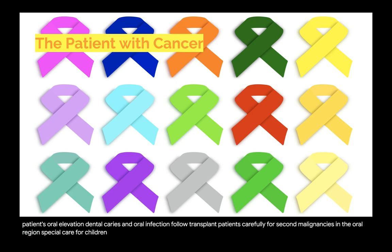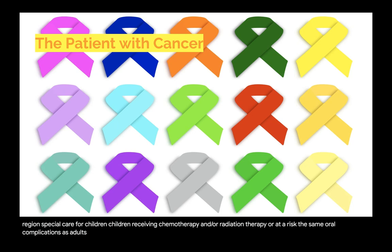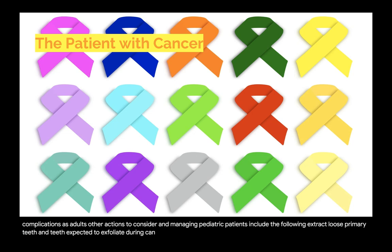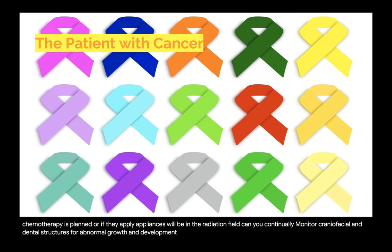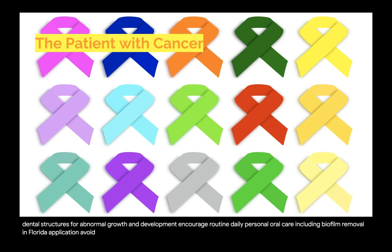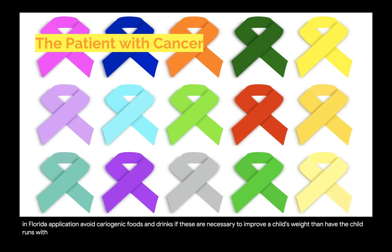Special care for children: children receiving chemotherapy and/or radiation therapy are at risk for the same oral complications as adults. Additional considerations include extracting loose primary teeth and teeth expected to exfoliate during cancer treatment, removing orthodontic bands and brackets if myelosuppressive chemotherapy is planned or if appliances will be in the radiation field, continually monitoring craniofacial and dental structures for abnormal growth and development, encouraging routine daily oral care including biofilm removal and fluoride application, avoiding cariogenic foods and drinks, and if necessary for weight improvement, having the child rinse with fluoridated water after eating or drinking.